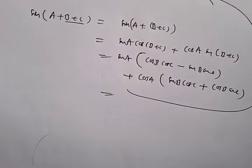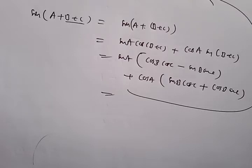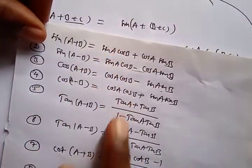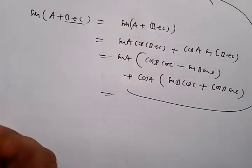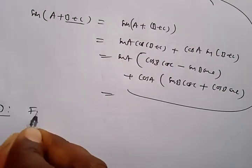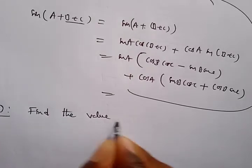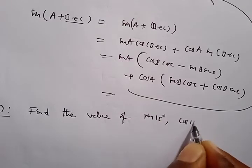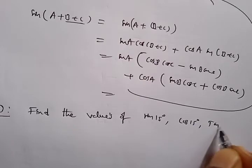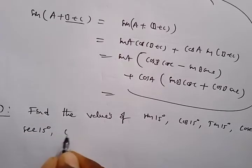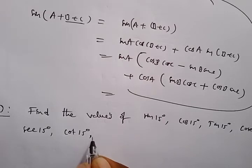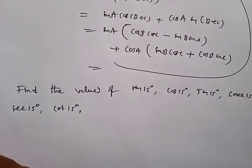Now let us find the trigonometric ratios of some specific angles. So far we know ratios for 0°, 30°, 45°, 60°, and 90°. Using the compound angle formulas, I am going to find sin 15°, cos 15°, and the other ratios of 15°.